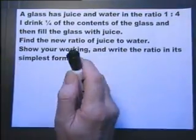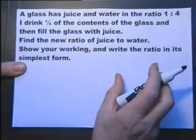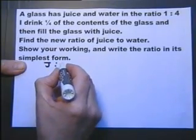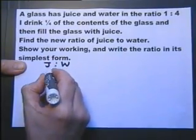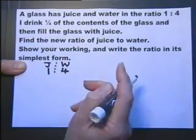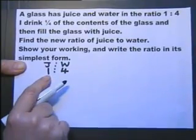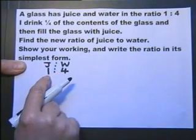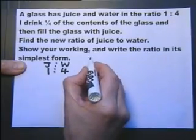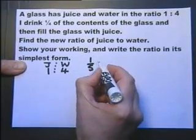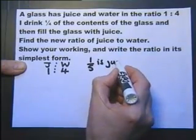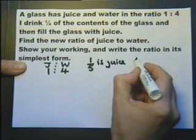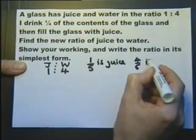A glass has juice and water in the ratio of 1 to 4. Let's make a note of that. So juice to water is 1 to 4. That means one part is juice and four parts is water. Or to put it another way, one part out of five parts is juice, in other words, a fifth is juice. And four parts out of the five parts, in other words, four fifths is water.